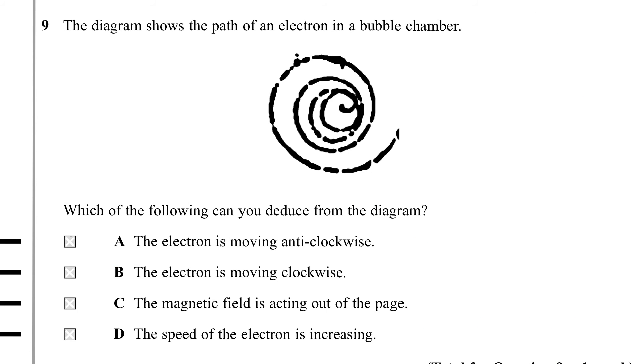Question 9. The diagram shows the path of an electron in a bubble chamber. Which of the following can you deduce from the diagram? Well, the most obvious thing to realize about a diagram like this is that if a particle is spiraling, it's because it's losing energy. It's not going to be gaining energy in the bubble chamber. So this particle must be spiraling inwards as it loses energy, because an object with lower momentum will have a smaller circle. So anything whose circle of motion is getting smaller is slowing down.